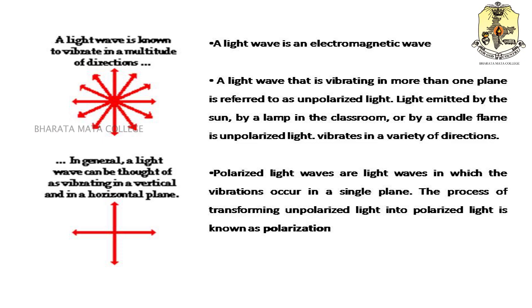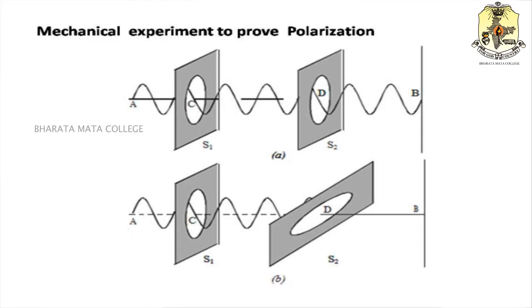The process of converting unpolarized light to polarized light is known as polarization. Now let us consider a mechanical experiment to demonstrate polarization. The experimental setup consists of a string and two slits S1 and S2. The string passes through slits S1 and S2, with one end fixed at point B and the other end free to move.